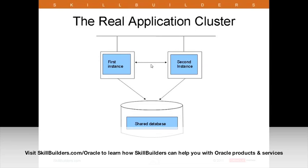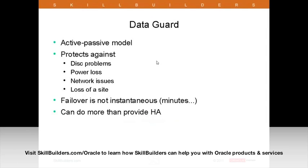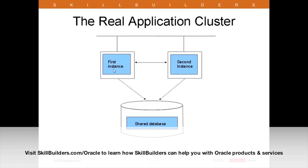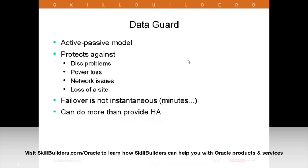Moving on to DataGuard — Oracle's premium product for zero data loss. It's an active-passive model. With RAC, both instances are open and working. With DataGuard in standard configuration, one machine is doing all the work and the other is purely there for fault tolerance. DataGuard protects against anything to do with the database such as disk problems. It protects against power loss because the nodes can be widely separated — potentially the other side of the continent. It protects against network issues and loss of site.